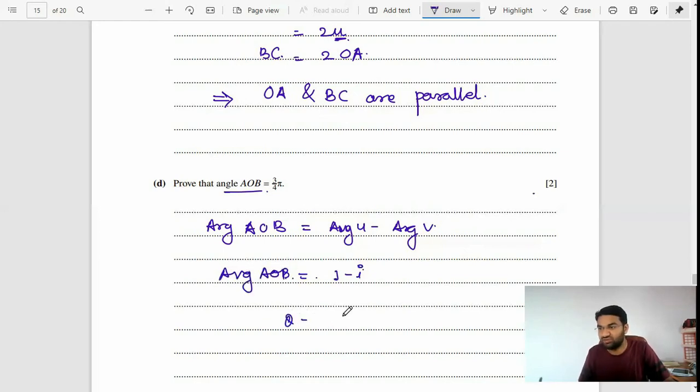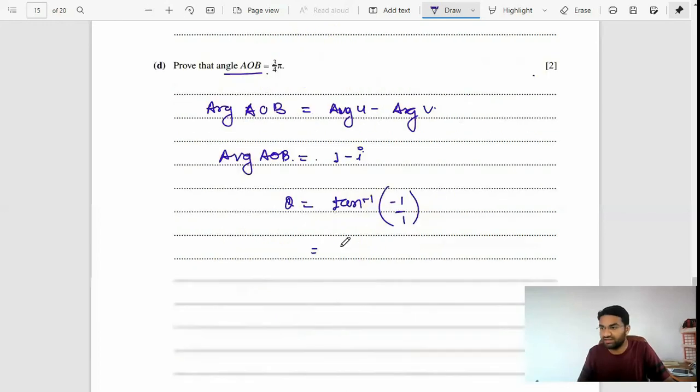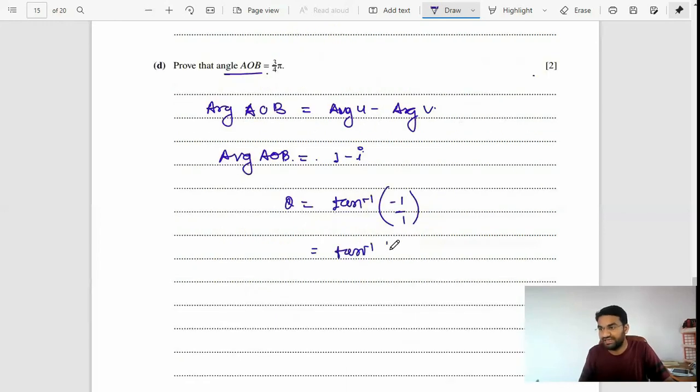Theta equals tan inverse of negative 1, so theta equals 3 pi by 4, which is basically 135 degrees. That's the right answer.